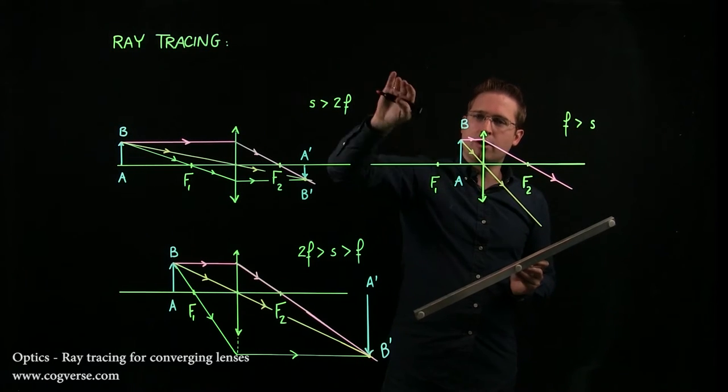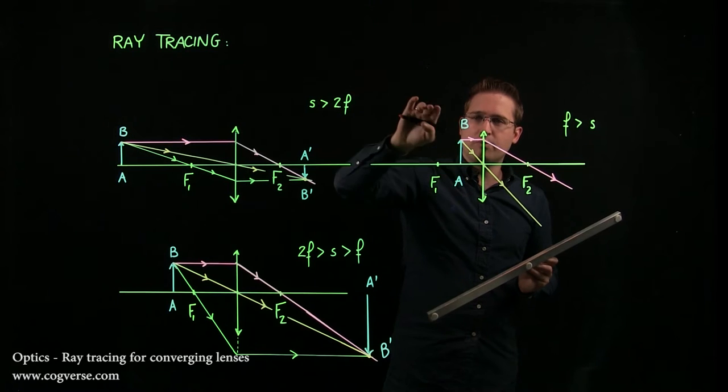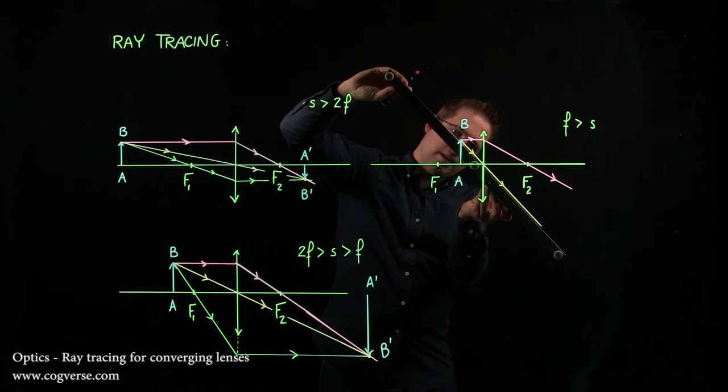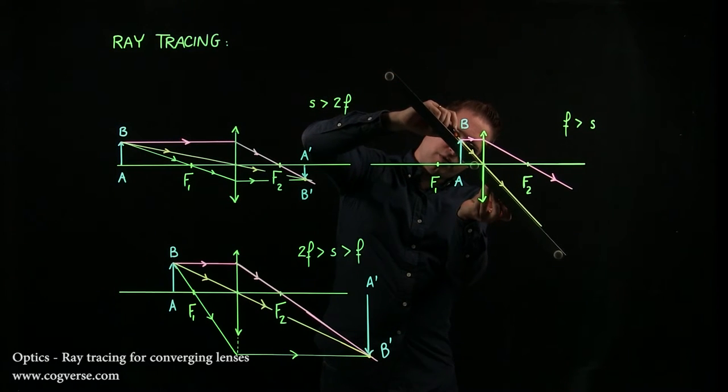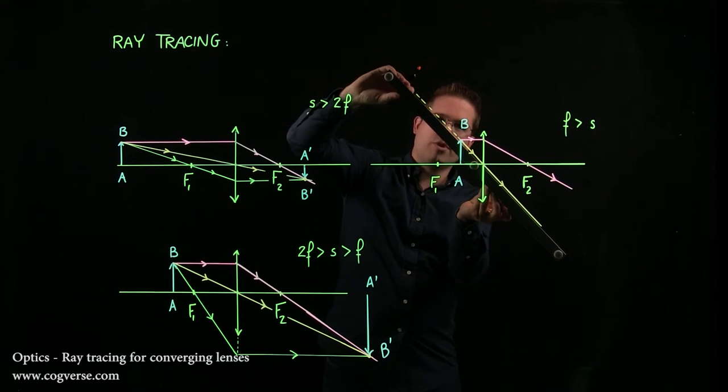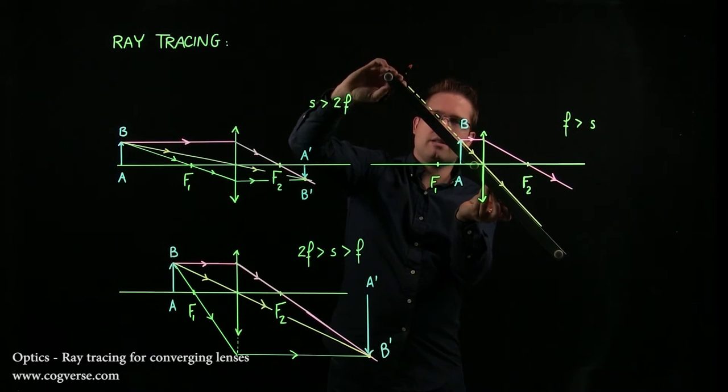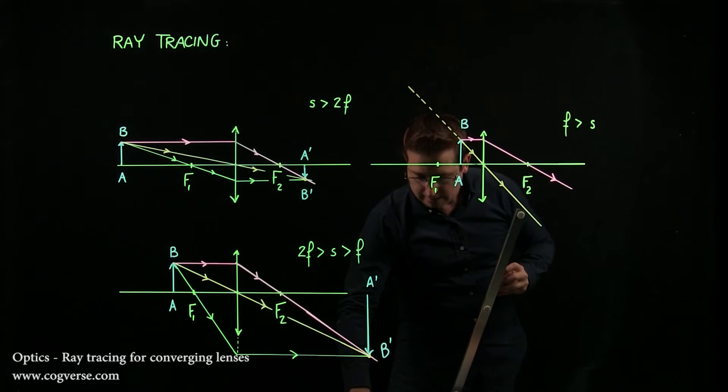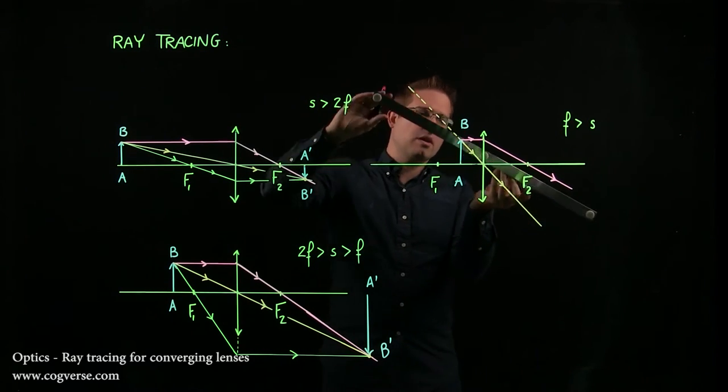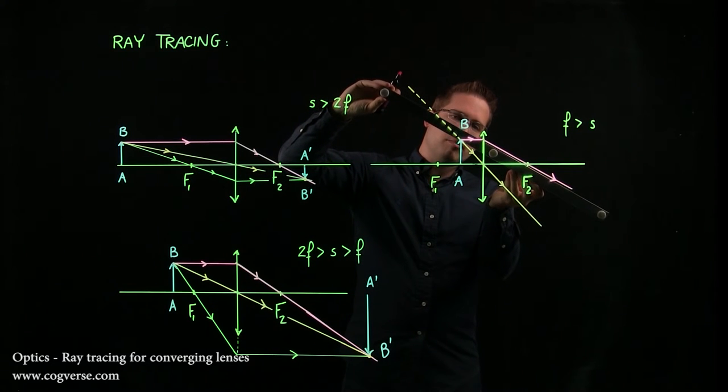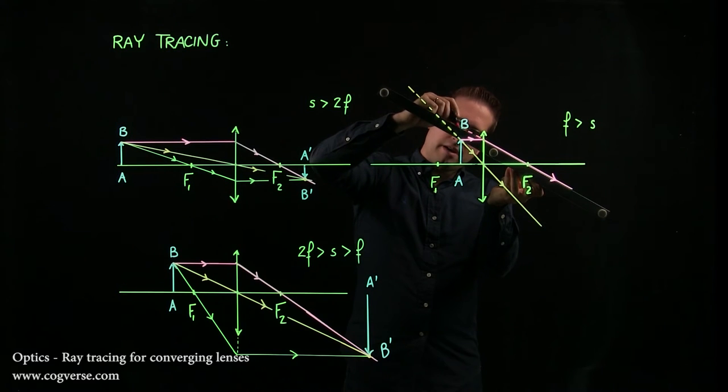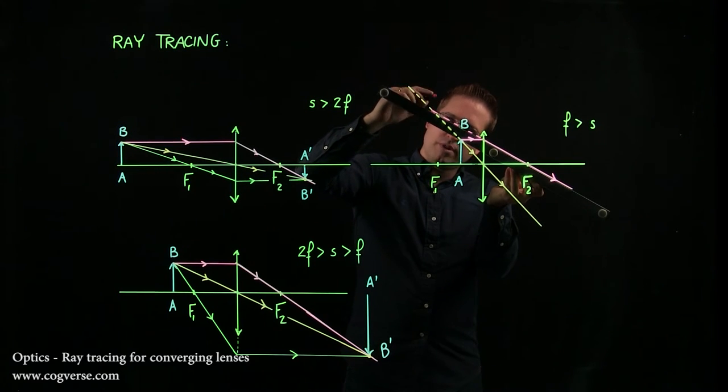But if we make them longer on this side, they will appear to come from a point up here. So I'm going to just make these two guys a bit longer and I'll use dotted lines because light doesn't actually come from the point up here. It looks like it does, but it doesn't really. And this is where the emerging rays appear to intersect. And so to me, because my brain thinks that light travels in a straight line, I think that the image formed out here.